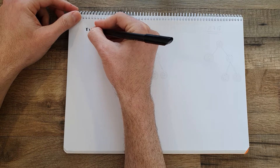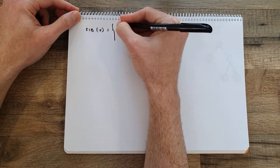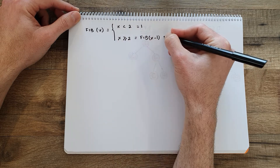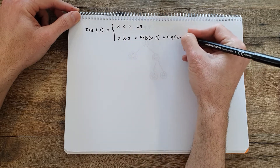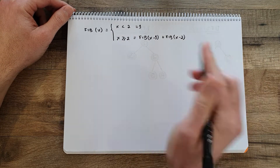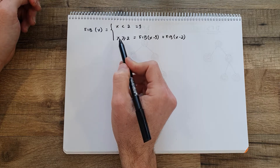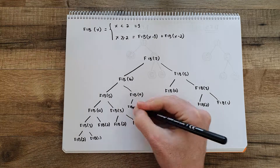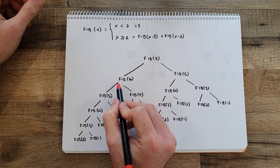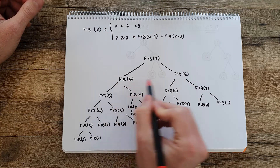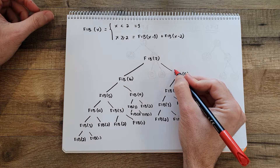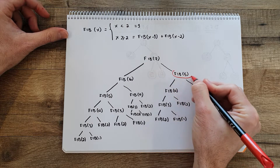I will now show you an example using the most common recursion example, which is Fibonacci. Fibonacci of a number x is: if x is less than 2, it equals 1; if x is equal to or larger than 2, it equals Fibonacci of x minus 1 plus Fibonacci of x minus 2. Let's say we want to calculate Fibonacci of 7. If you draw the tree, we see that we need to calculate Fibonacci of 6 and Fibonacci of 5, which gets duplicated in different parts. We can see that Fibonacci of 5, for example, is calculated here and here.